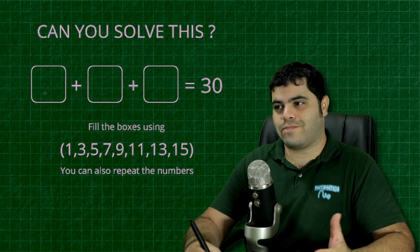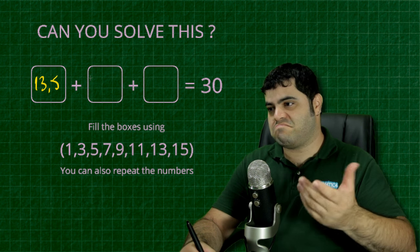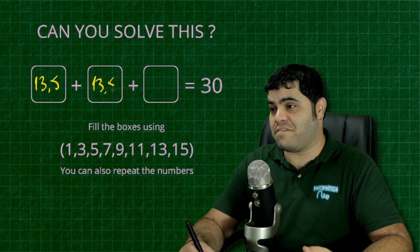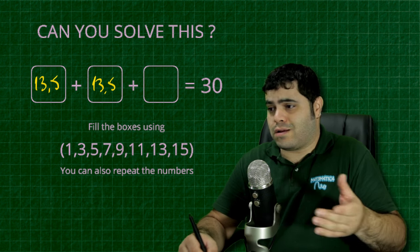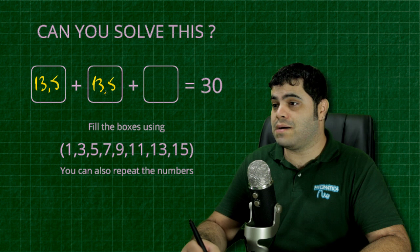So I will use, for example, 13 comma 5 here, and then again I could use 13 comma 5 here. So I could use any of these numbers and repeat the numbers, right? So this will sum up to 27.